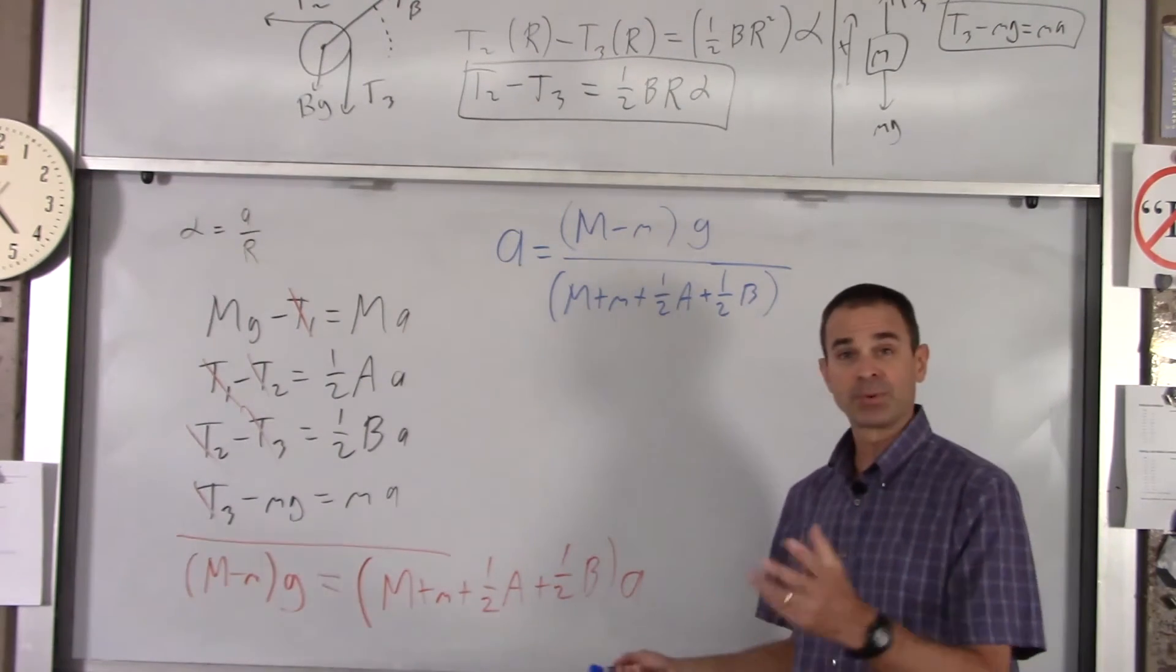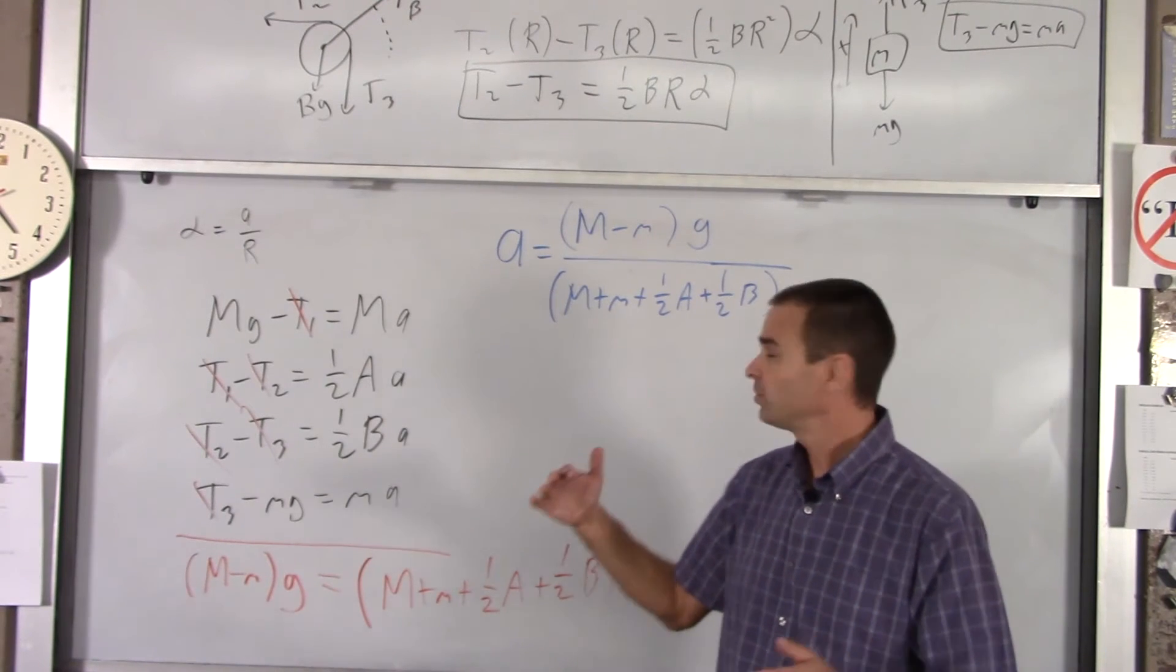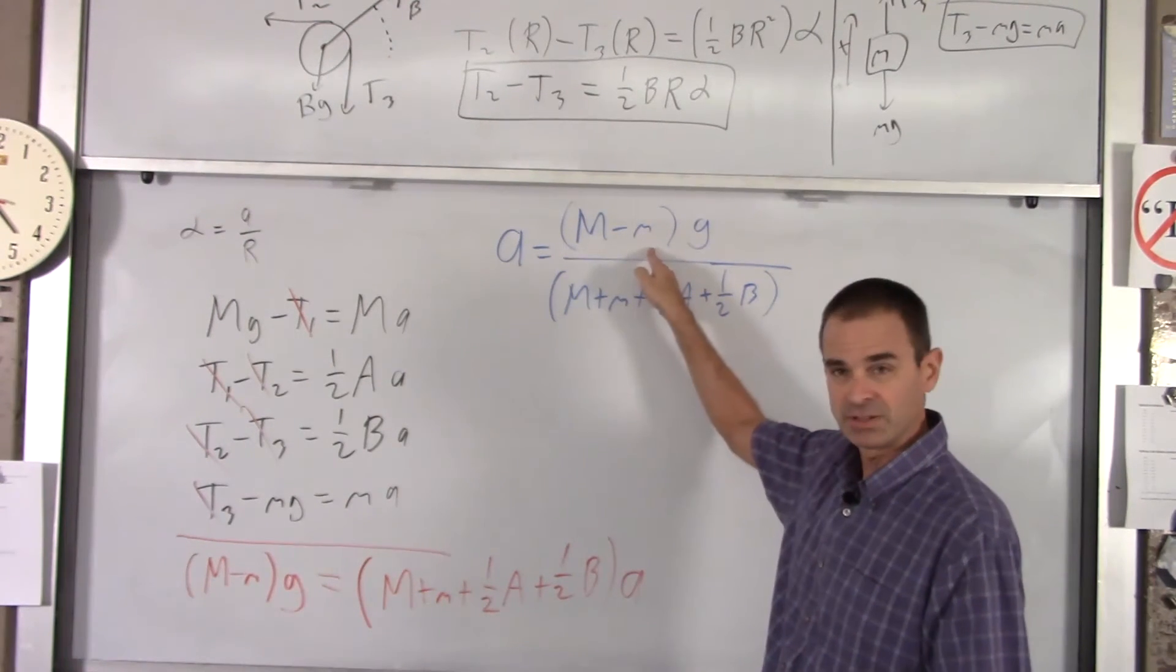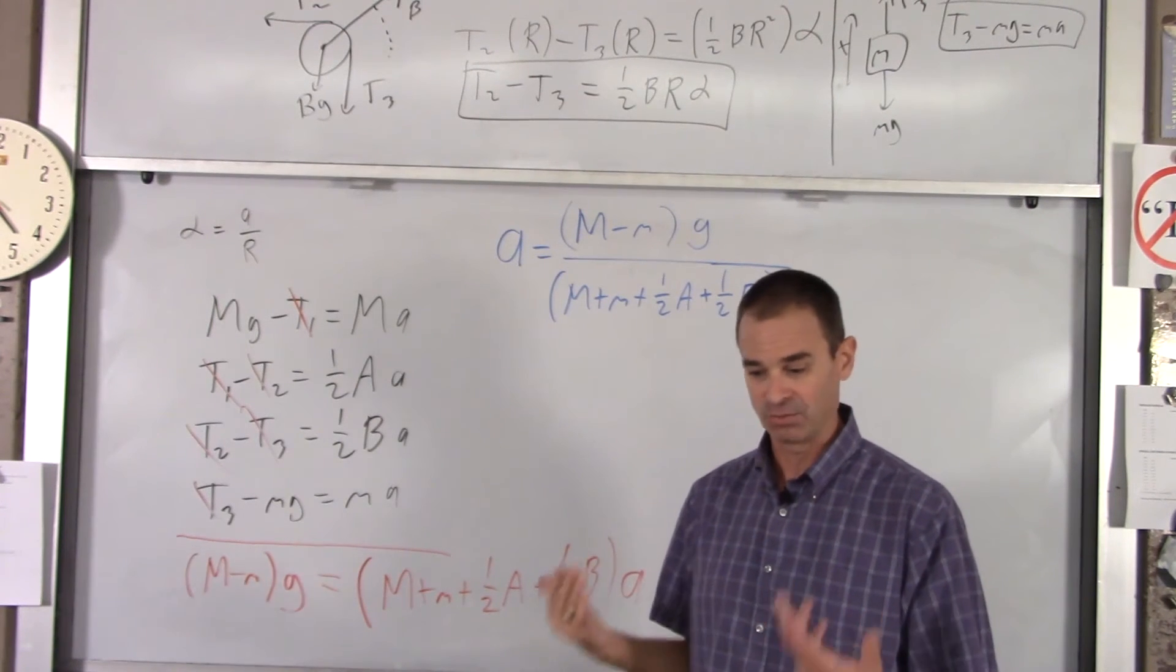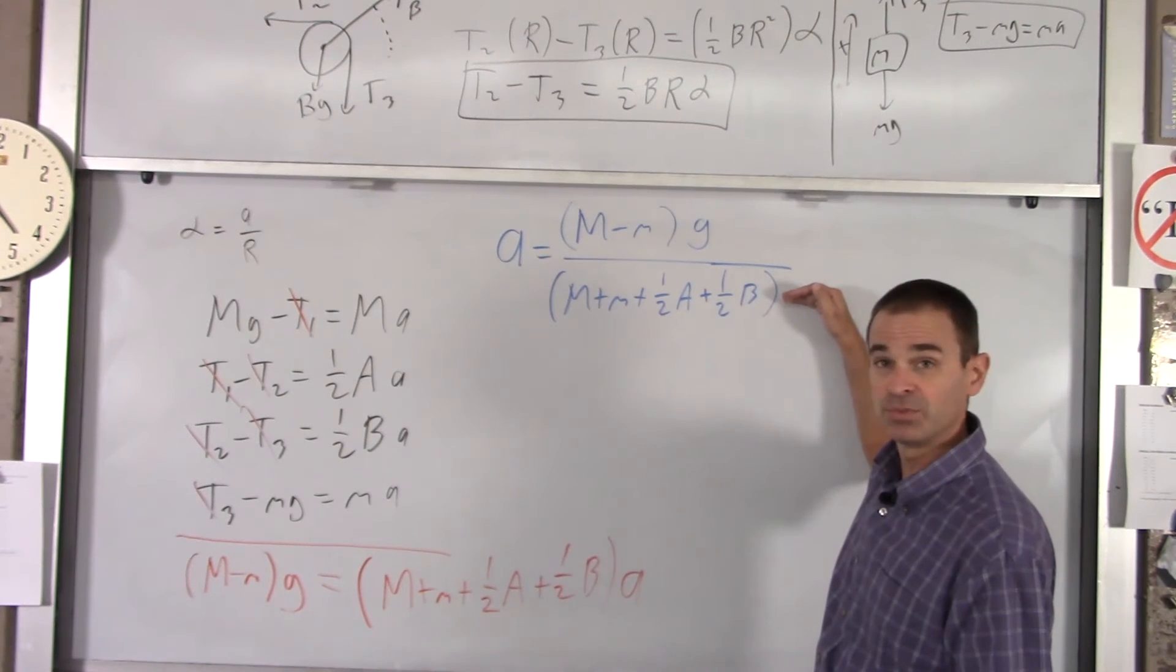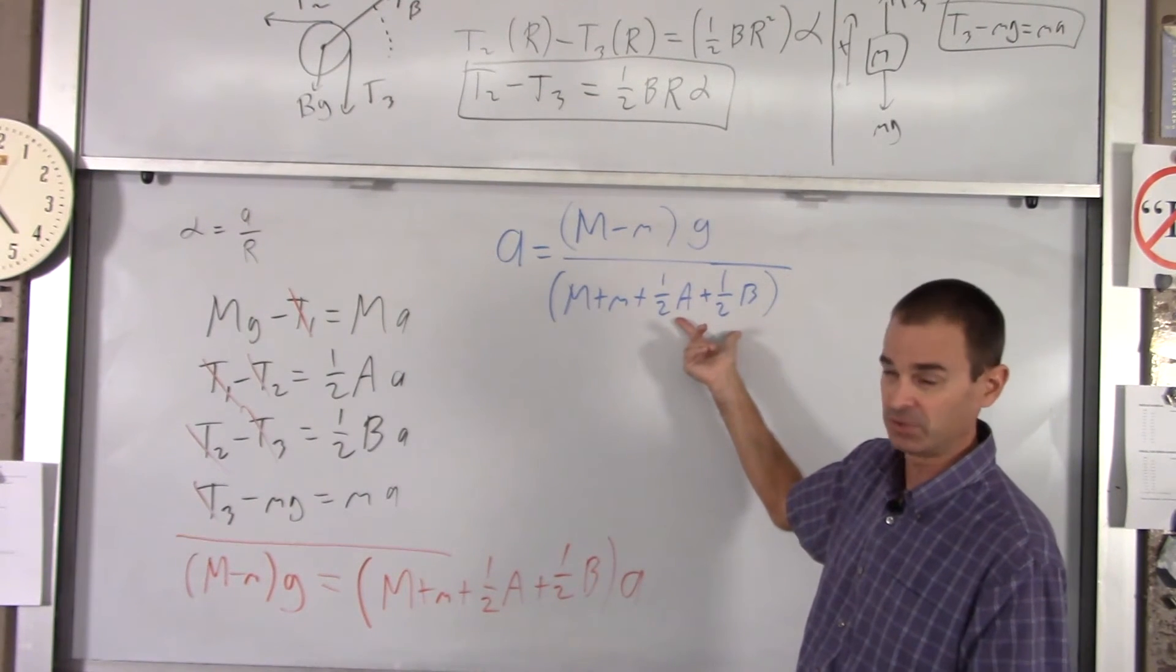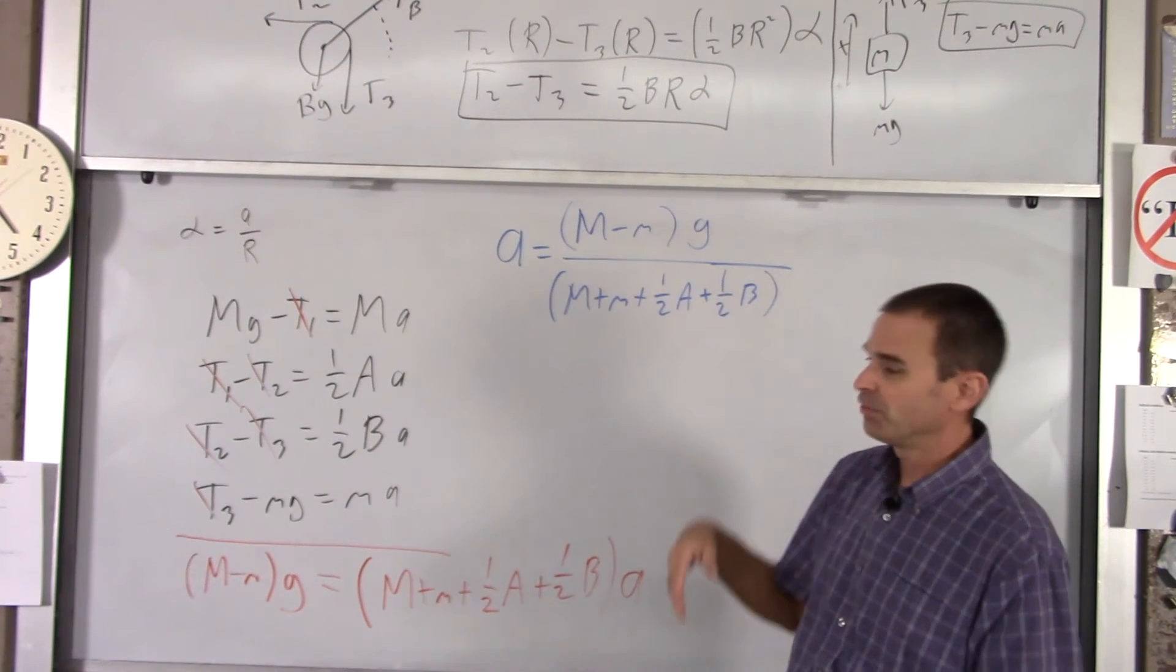We're going to throw numbers in this in a second. But before we do that, a couple quick notes. It's good to solve this thing without numbers because you start to see relationships. For instance, big Mg minus little mg, what is that? That's like the net force acting on your system, the net driver of your system. What's all this? This is the system's resistance to motion. You've got the two masses and then half of each pulley mass resisting the motion or the change in motion of your system.